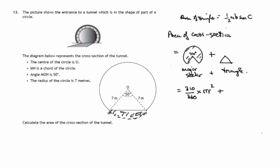You'll be given that in your exam on the formula sheet. It means that in this case, it's a half of 7 times 7 times the sine of 50. So 310 over 360 of pi, and the radius of this circle is 7, so pi times 7 squared, plus a half of 7 times 7 times sine 50. So that's the calculation that we have to do.